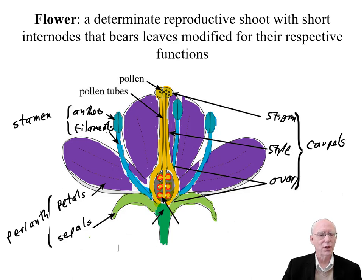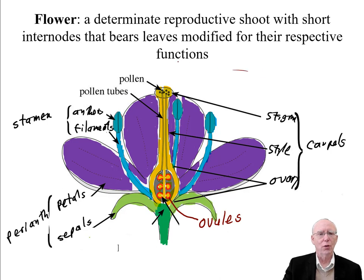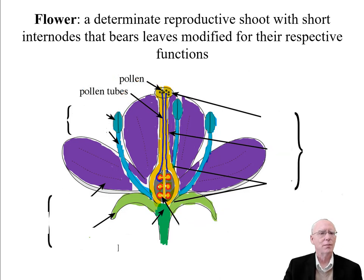Those are the basic parts of the flower. We want to look at one more thing — the pollen and pollen tubes. The pollen is going to land on the stigma, and from the stigma the pollen is going to produce pollen tubes. Here we have our pollen grains, and here are the pollen tubes growing down through the style.